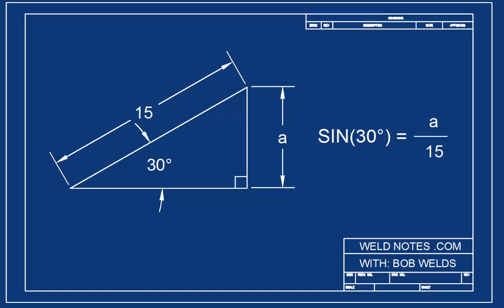Okay, there are the blanks filled in. The sine of 30 degrees is equal to A over 15. A is the opposite side and 15 is the hypotenuse. The sine of an angle is the opposite over the hypotenuse.